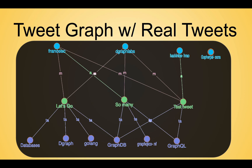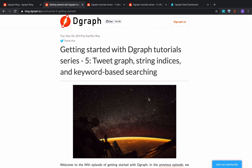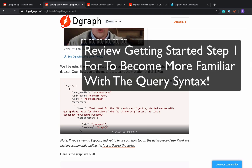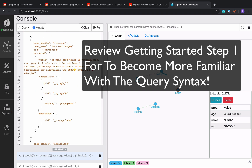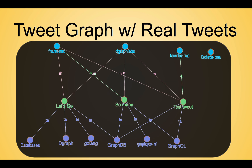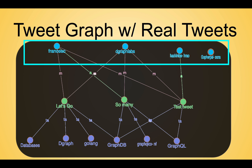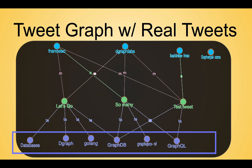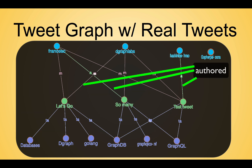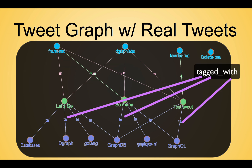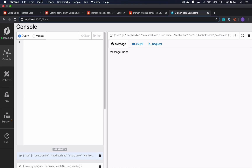Let's see the graph with real tweets. We have some real DGraph tweets to use. Here's the code to create relationships of what we built with real tweets. Please review the first blog post and accompanying video if the query code is unfamiliar. Let's discuss the colors and how they communicate what's going on: user nodes are blue, tweet nodes are green, hashtag nodes are purple, authored edges are green, mentioned edges are pink, and tagged-with edges are purple.